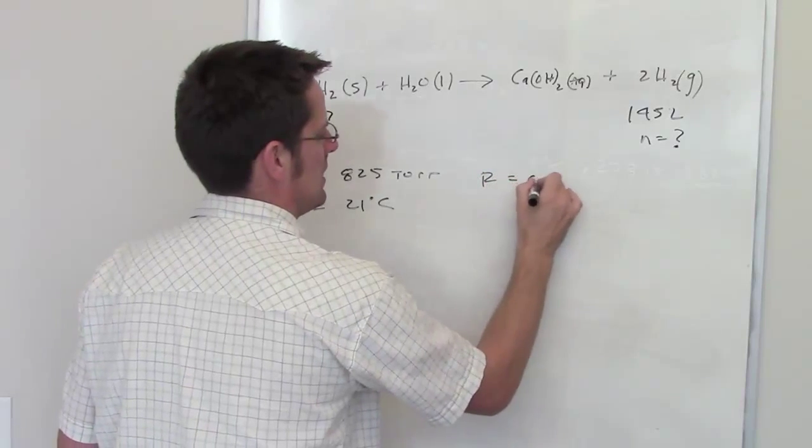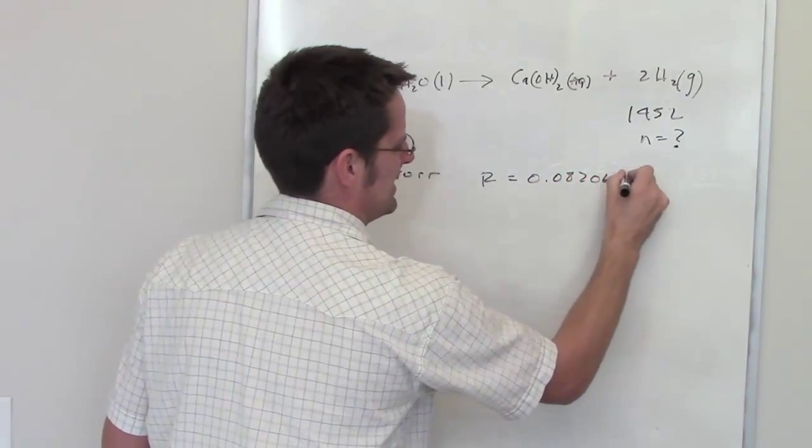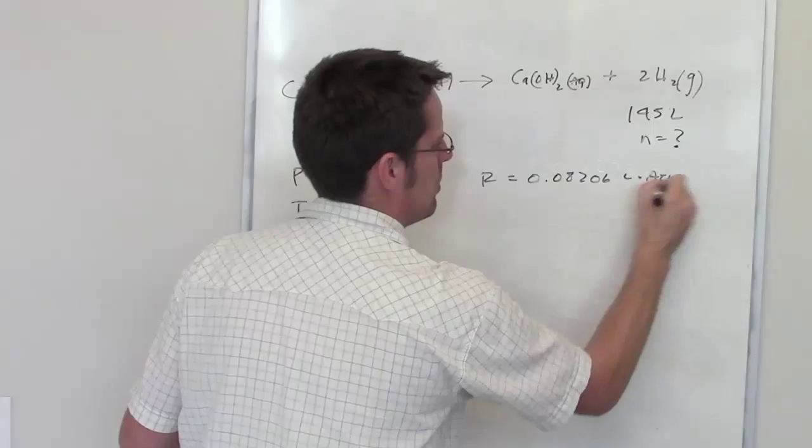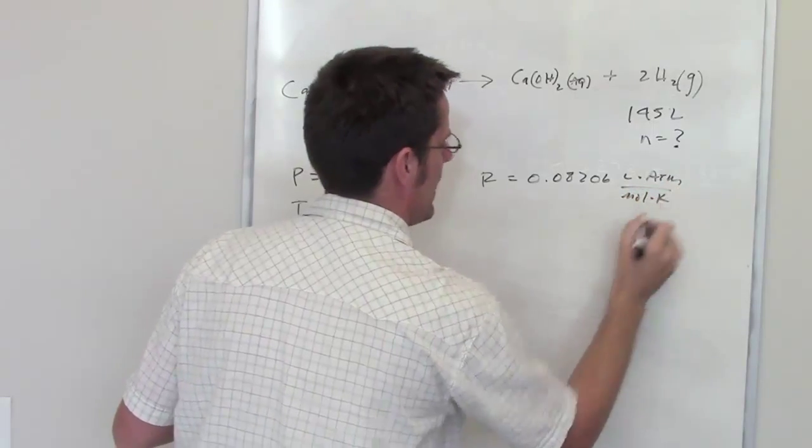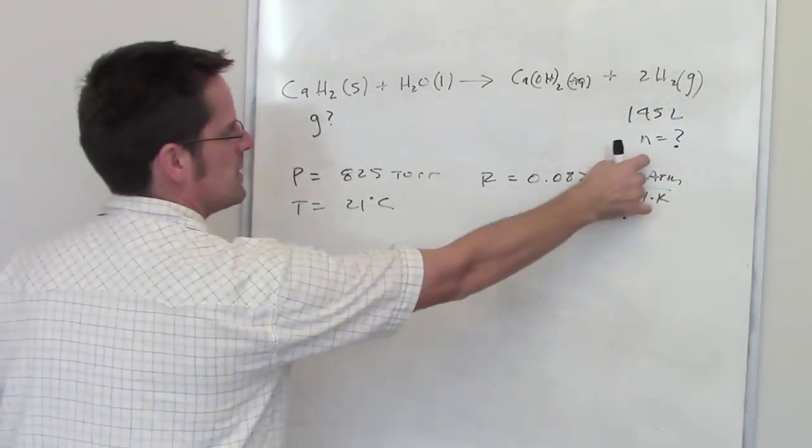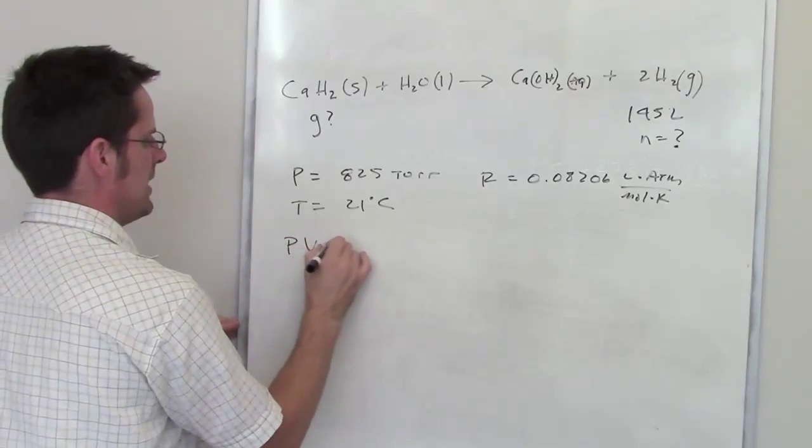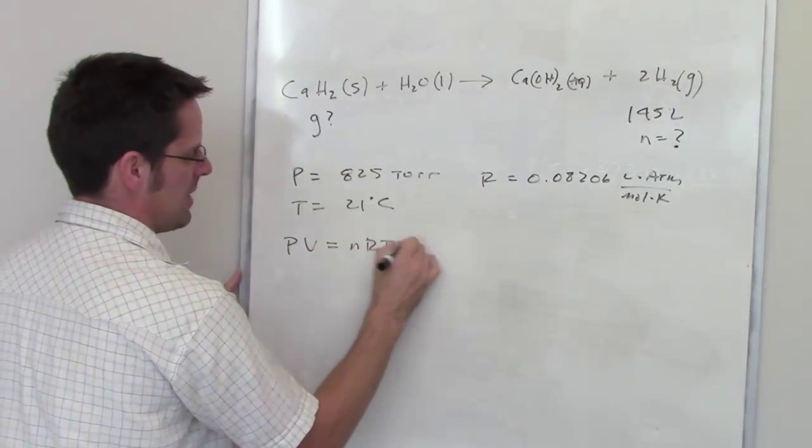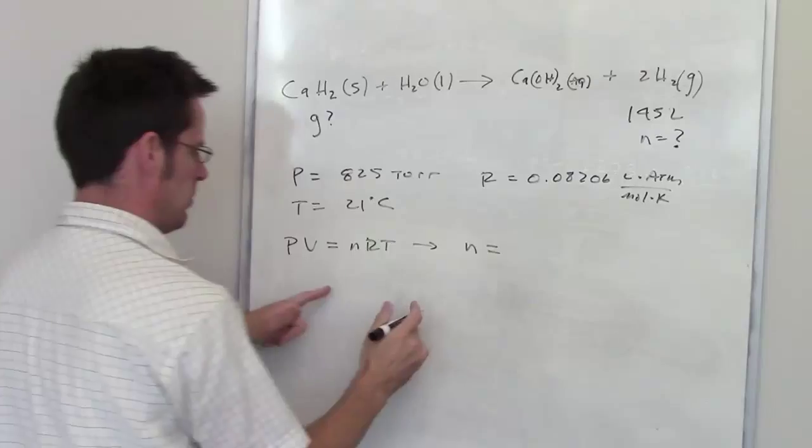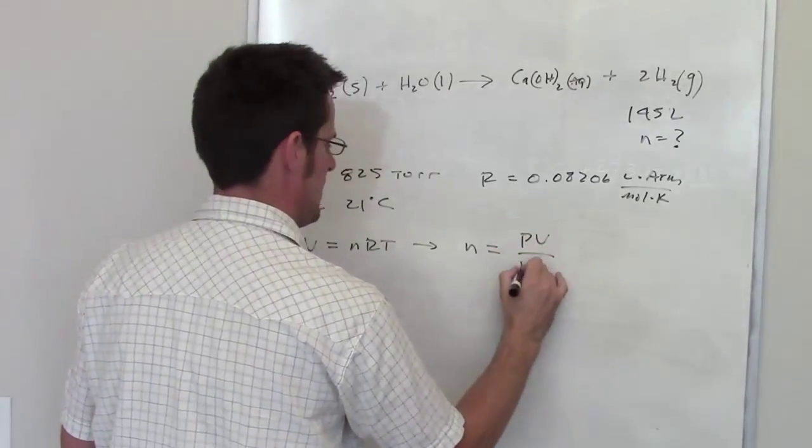Of course, the ideal gas constant is 0.08206 liter atmospheres per mole kelvin. And I'm going to use the ideal gas law to determine what the number of moles is. Ideal gas law is PV equals nRT. I'm going to rearrange it algebraically to put n on one side and everything else on the other, PV divided by RT.